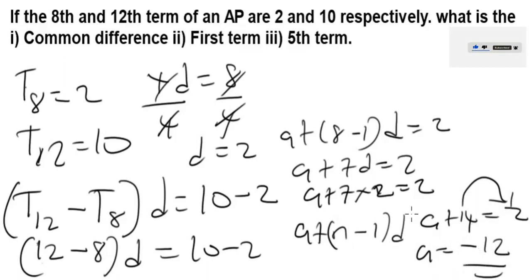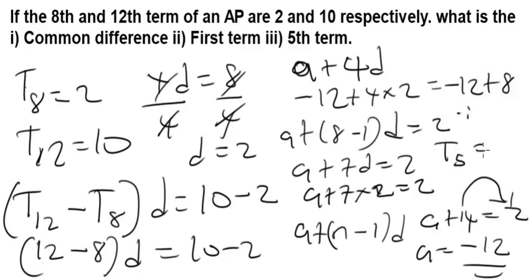So the first term is minus 12. Now to get the fifth term, it's going to be a plus 4d since it's the fifth term. Our a is minus 12, which will be minus 12 plus 4 times 2, which gives us minus 12 plus 8. Therefore T5 will be minus 4. So that will be the answer.